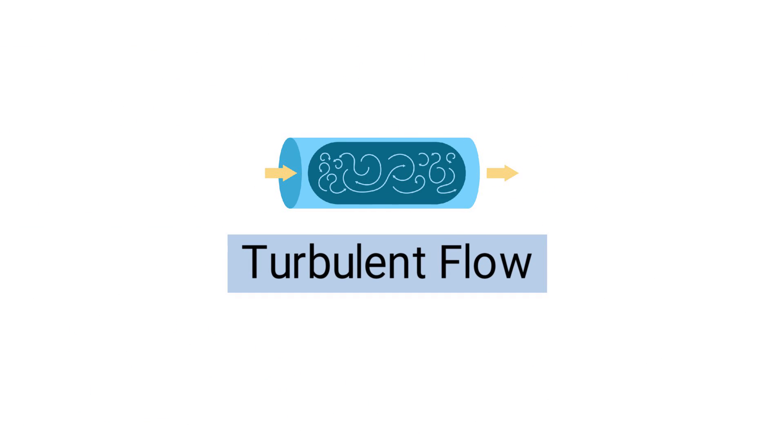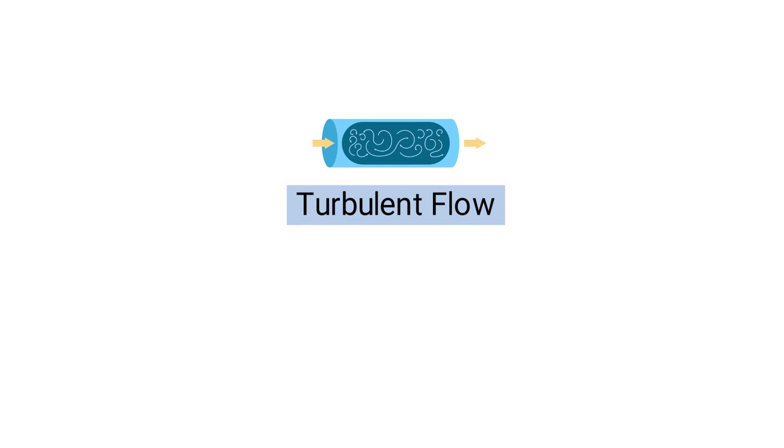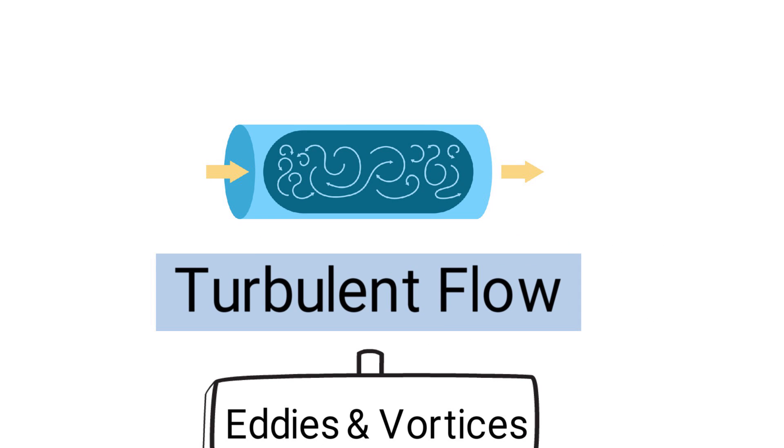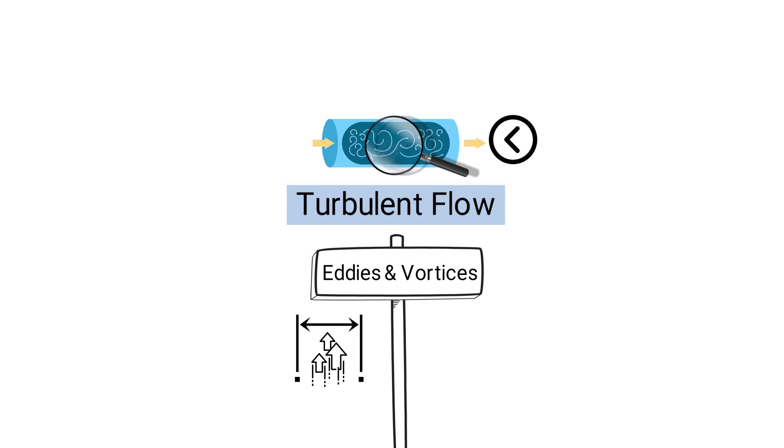Turbulent flow, on the other hand, is characterized by chaotic and irregular movement of air. This type of flow occurs in areas where the airways are wider and the speed of airflow is higher. Turbulent flow involves eddies and vortices, with air molecules moving in a random and mixed manner. It is less efficient than laminar flow, but can transport larger volumes of air quickly.